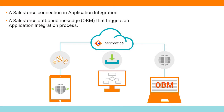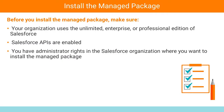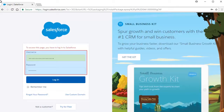The Salesforce managed package for Informatica Cloud Real-Time version 1.24 uses version 40 of the Salesforce API. Use the URLs shown here to install or upgrade to the latest managed package. Before you install the managed package, make sure your organization uses the Unlimited, Enterprise, or Professional edition of Salesforce, Salesforce APIs are enabled, and you have administrator rights in the Salesforce organization.